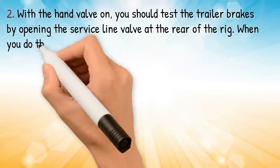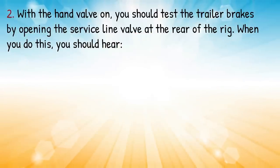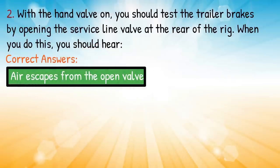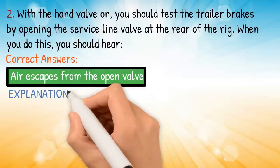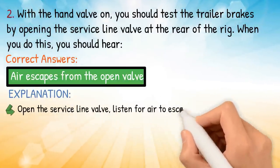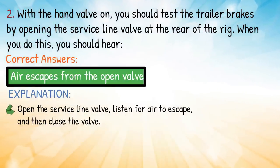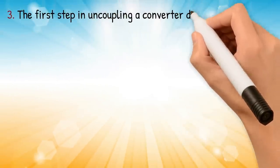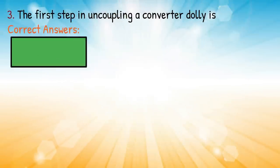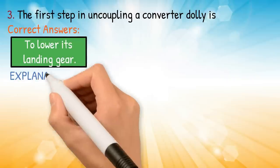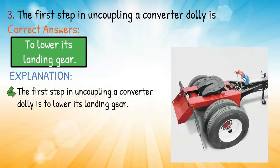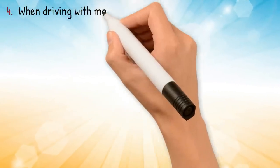Question two: with the hand valve on, you should test the trailer brakes by opening the service line valve at the rear of the rig — when you do this you should hear — correct answer: air escaping from the open valve. Explanation: open the service line valve, listen for air to escape, and then close the valve. Question three: the first step in uncoupling a converter dolly is — correct answer: to lower its landing gear. Explanation: the first step in uncoupling a converter dolly is to lower its landing gear.